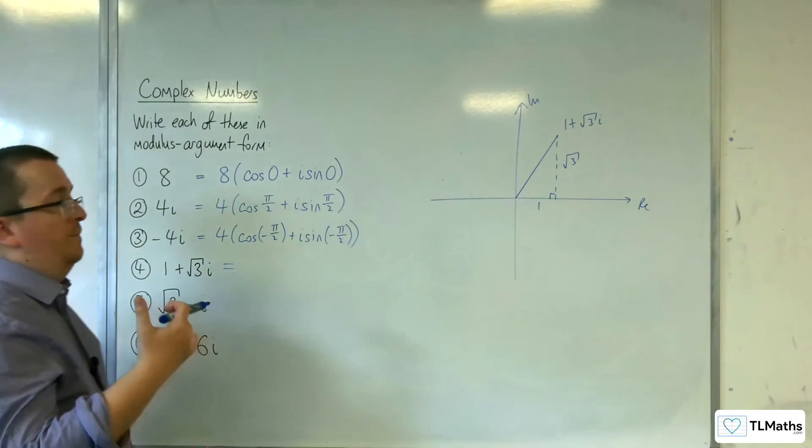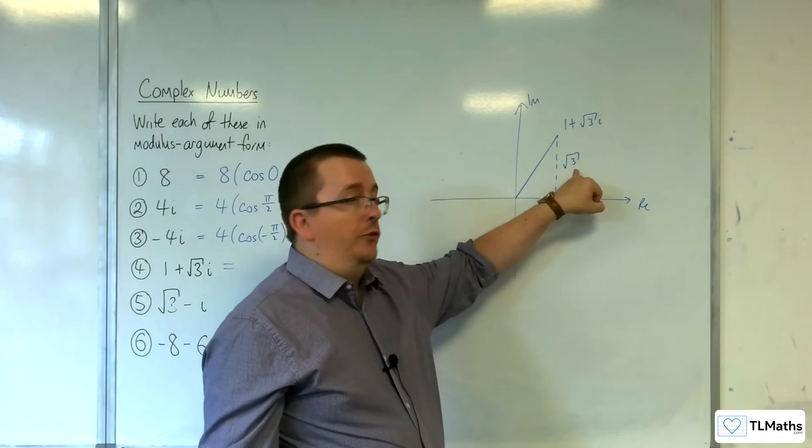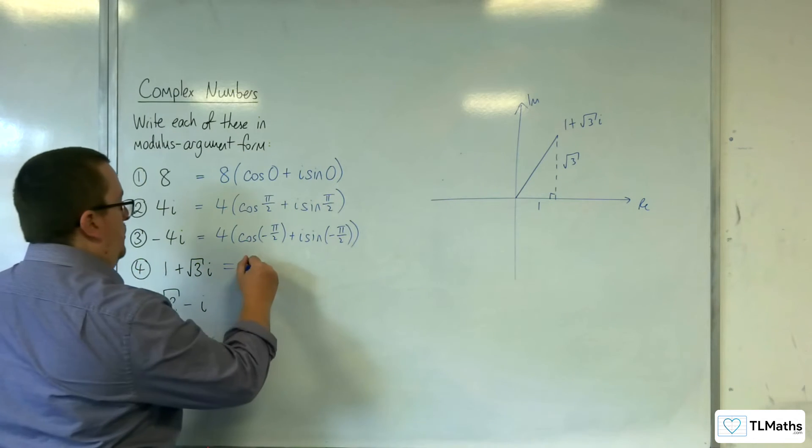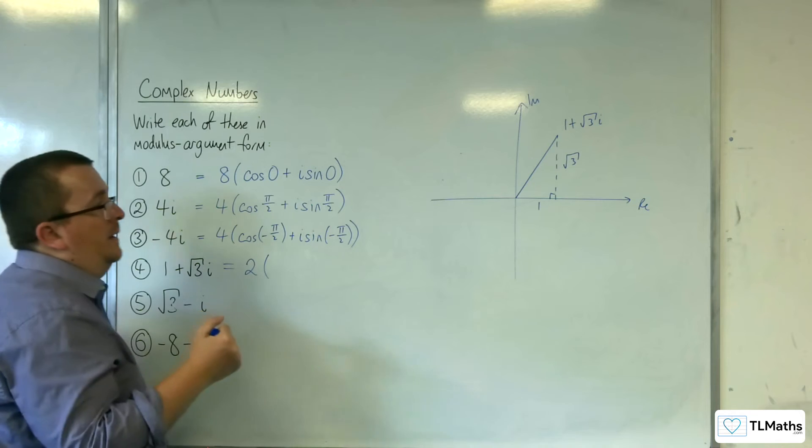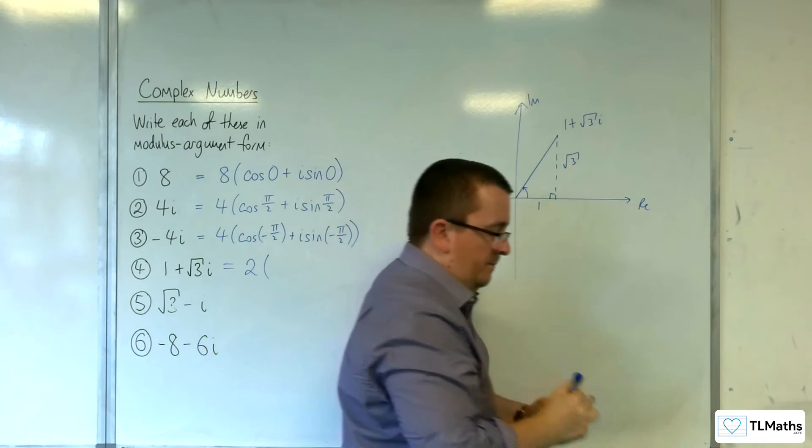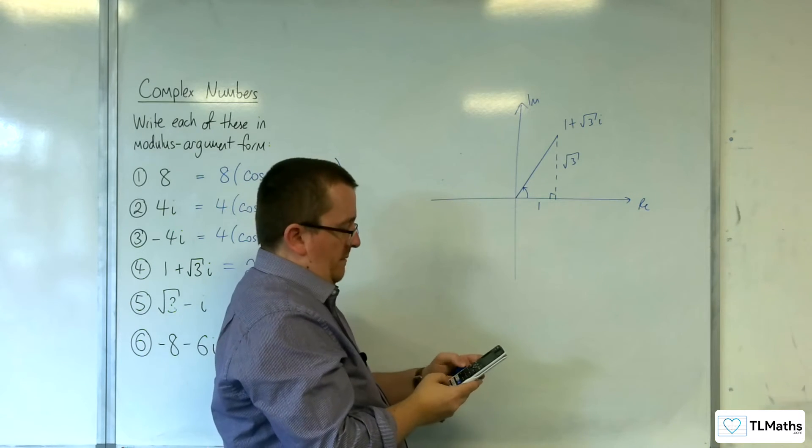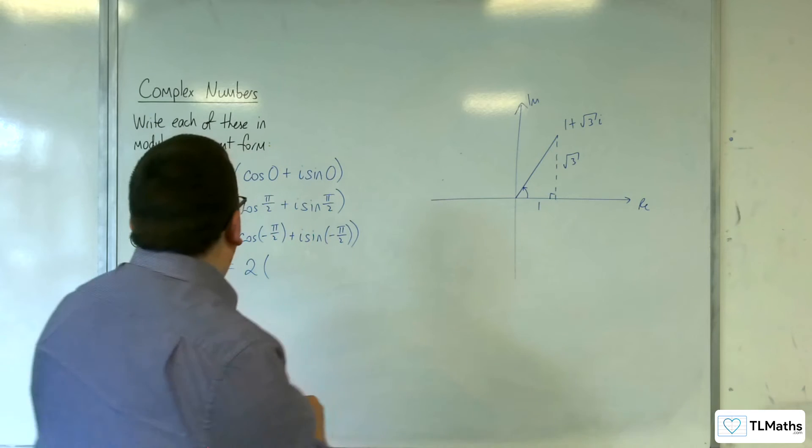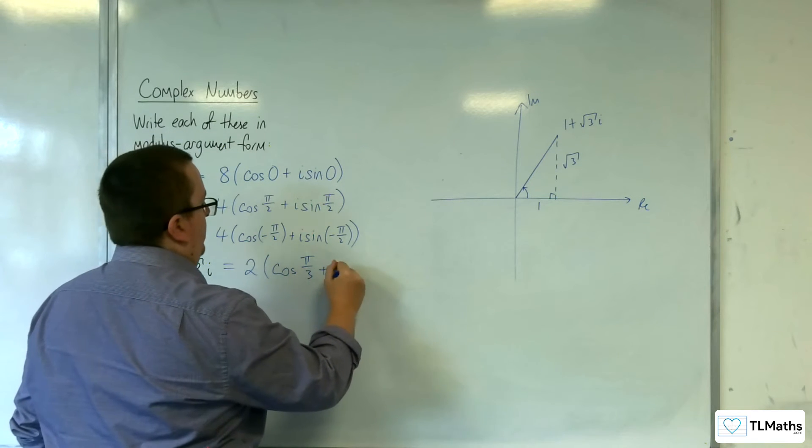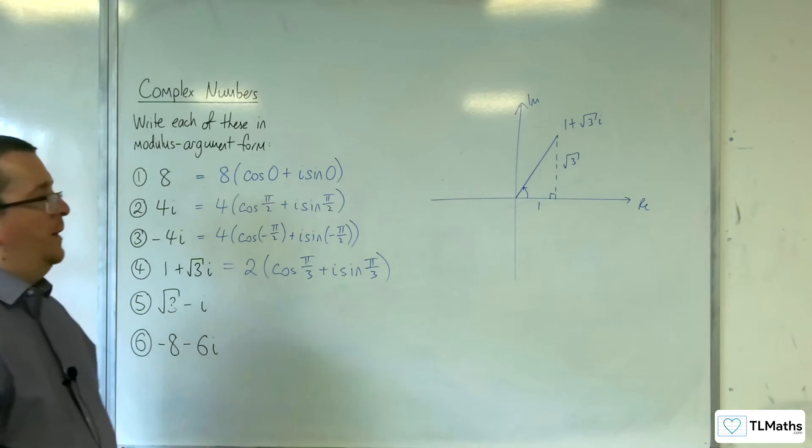The modulus of it is the square root of 1 squared plus √3 all squared. So 1 plus 3 is 4 squared, that is 2. So 2 lots of—now I need the angle. We've got inverse tan of √3, which is π over 3. So 2 cosine π over 3 plus i sine π over 3. That's that one.